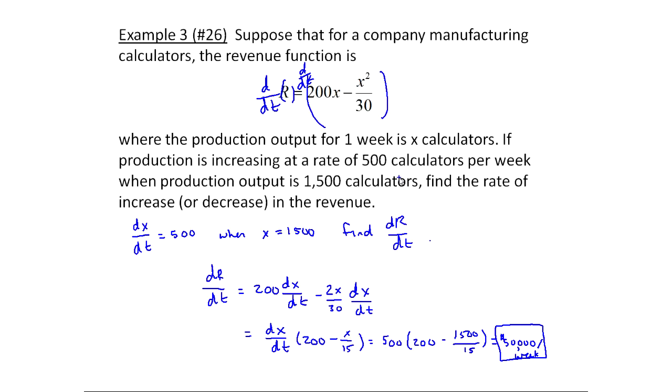But what made it different was we were given the relationship. That made everything different here. So it's all about taking the relationship or figuring out what the relationship would be and then using that to relate all the rates. That's why it's called related rates. You're taking a relationship between the variables and bringing back a relationship among the rates of change.